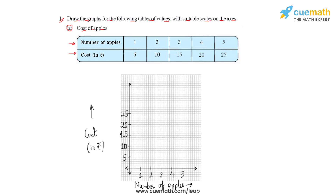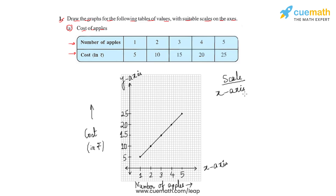We have already marked the x-axis as the number of apples and the y-axis as the cost in rupees. If we plot these points on this graph sheet, we'll get a line graph like this. Let us first write the scale of both the axes. As we observe the x-axis, we see that these small boxes are counted as units. For the x-axis, we have taken five units, and those five units represent one apple.